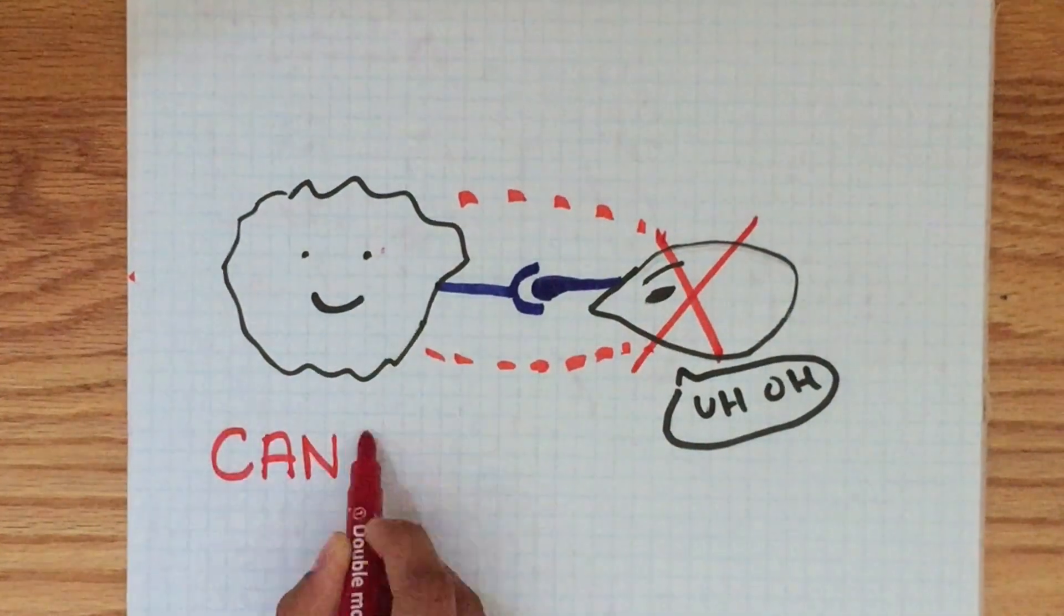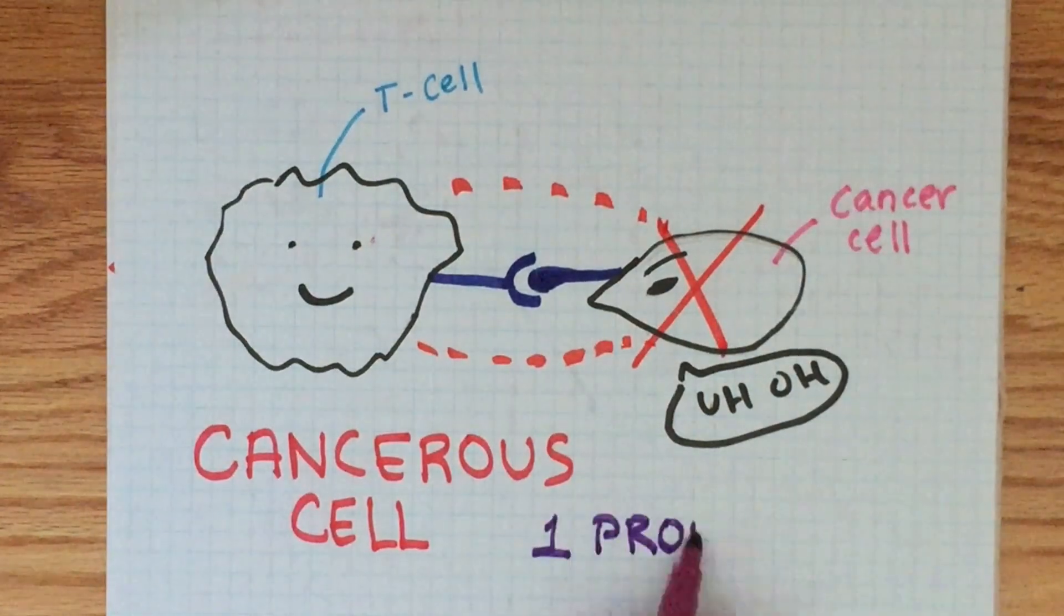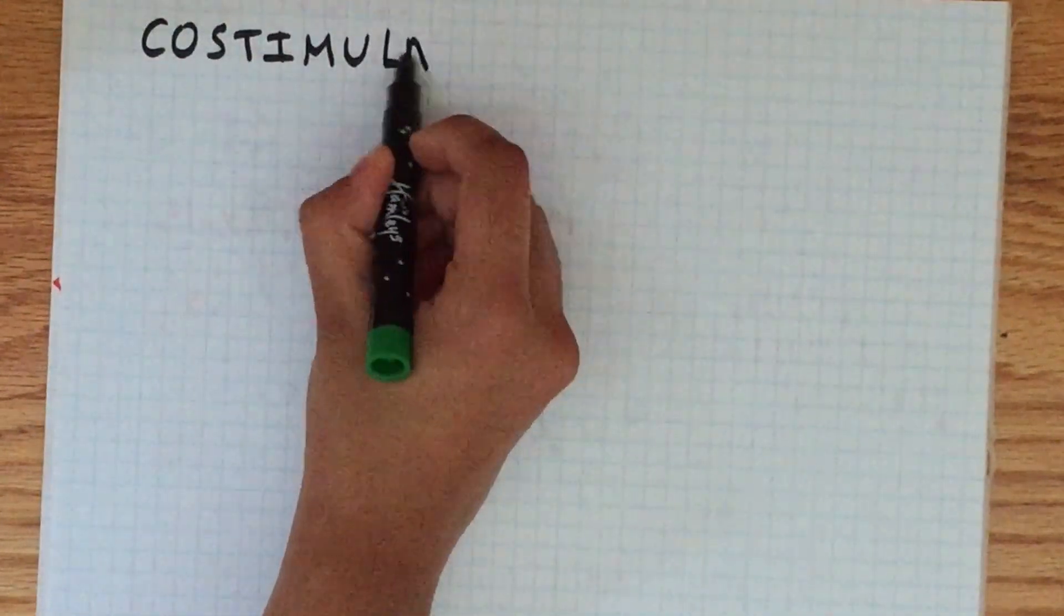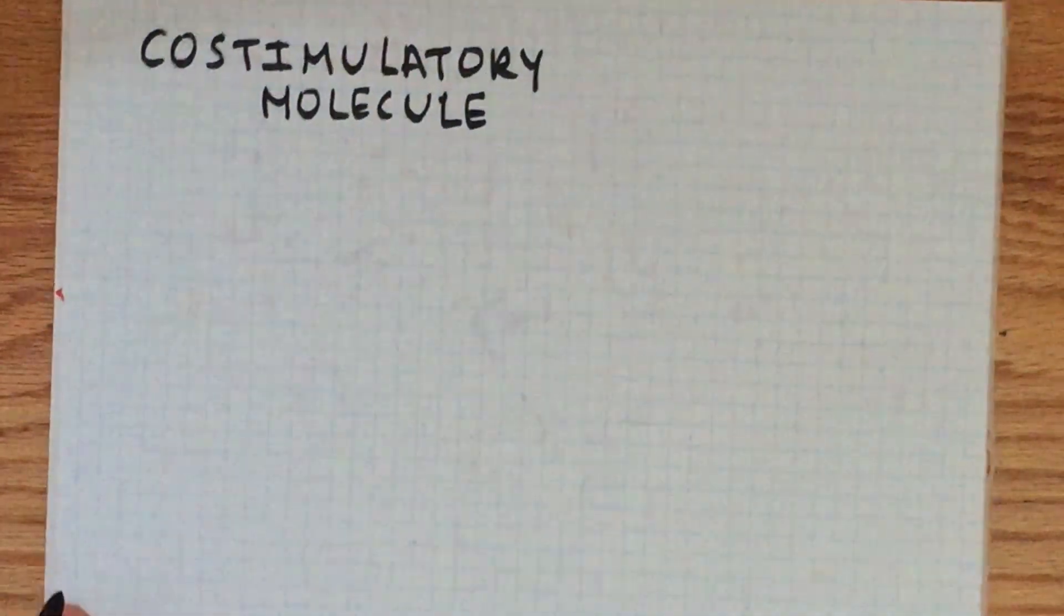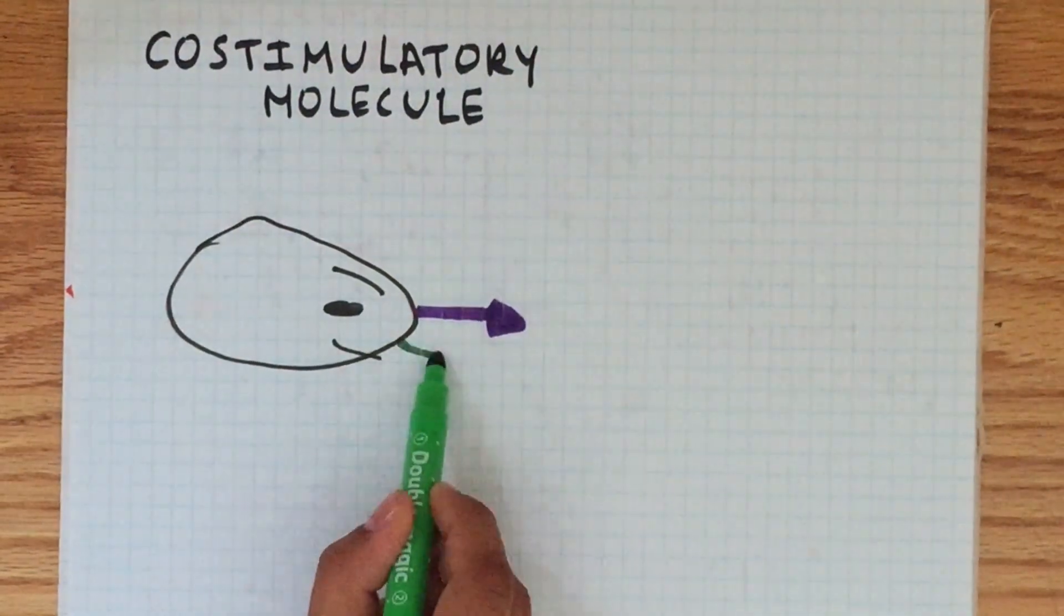There is a T-cell with a complementary receptor to the cancerous cell, which binds onto the cell antigen. The problem here occurs due to co-stimulatory molecules. A co-stimulatory molecule is one that enhances the encounter between two cells, and oftentimes is helpful.